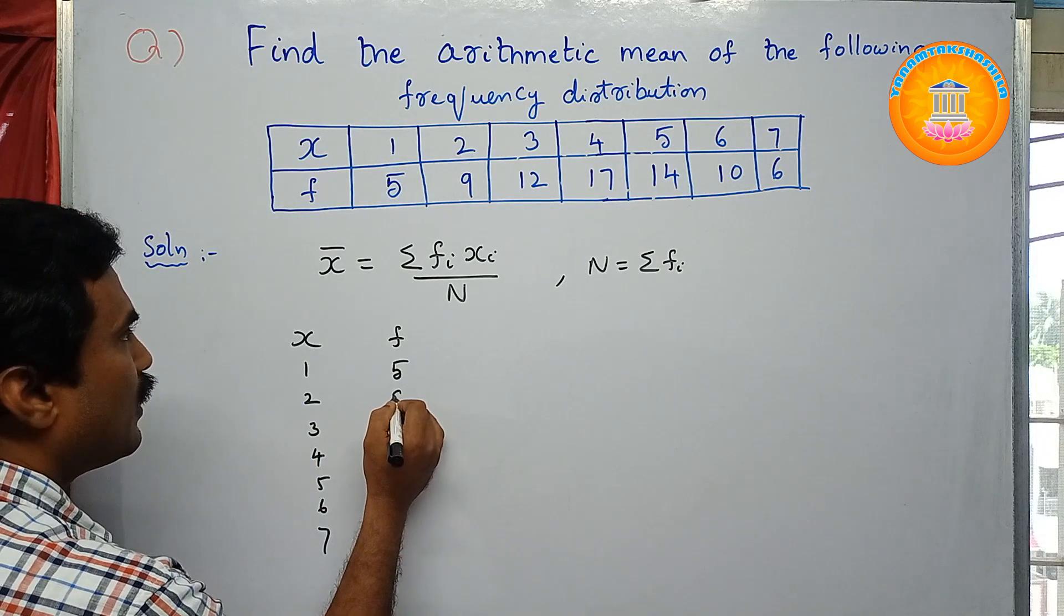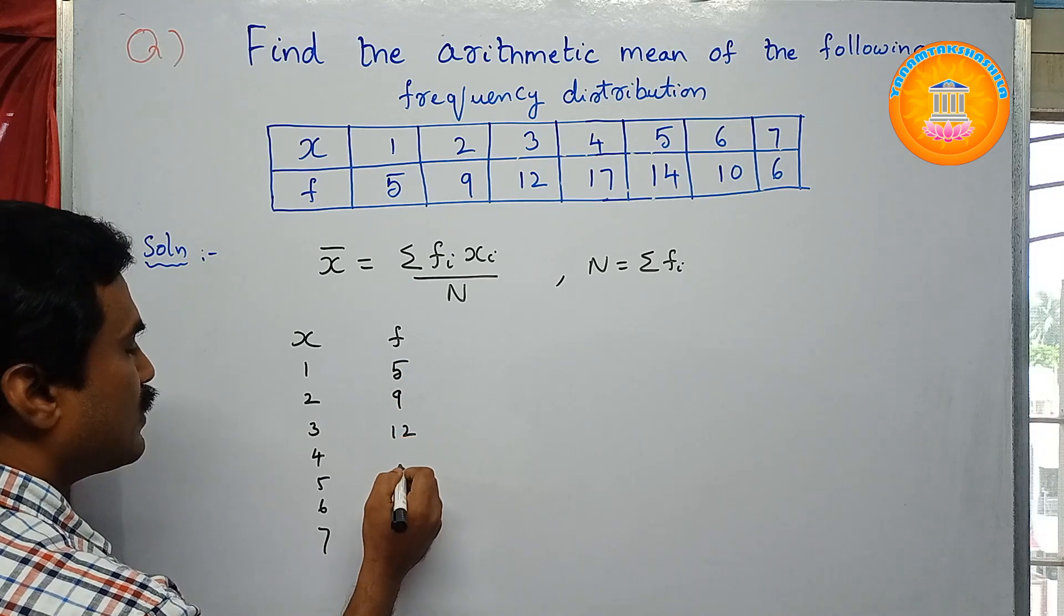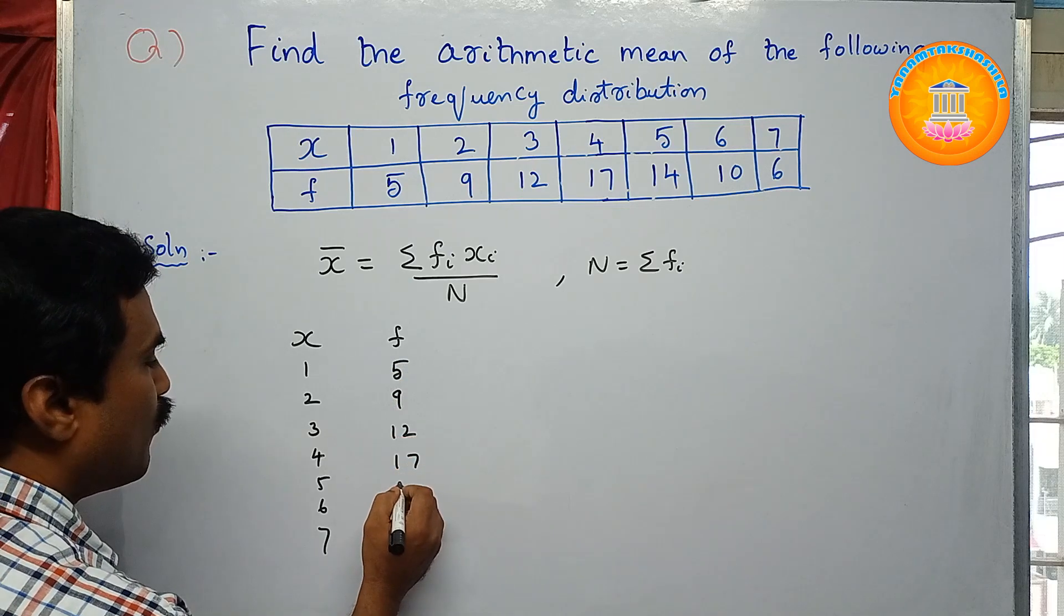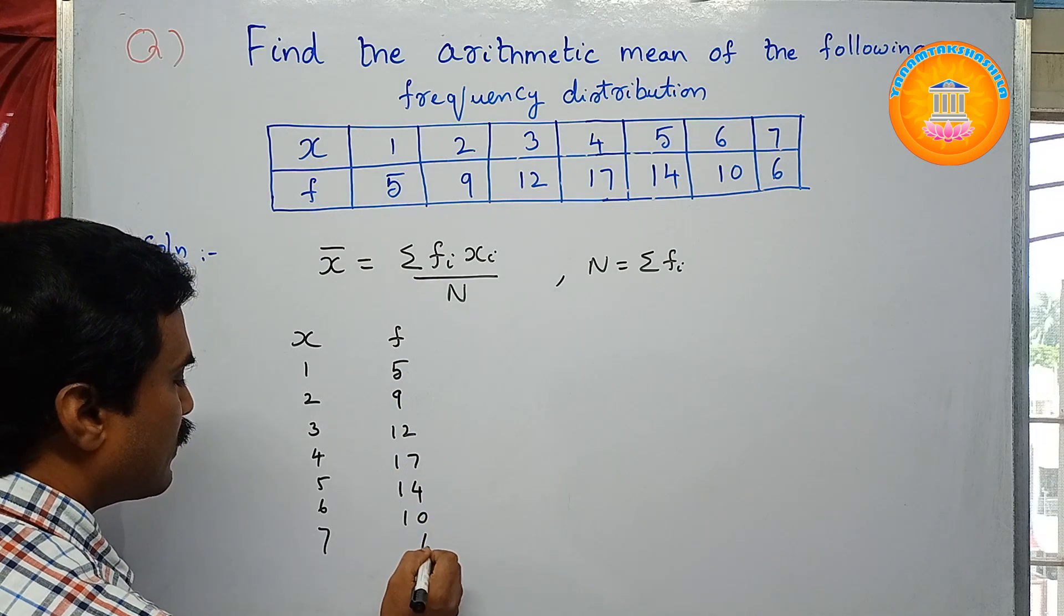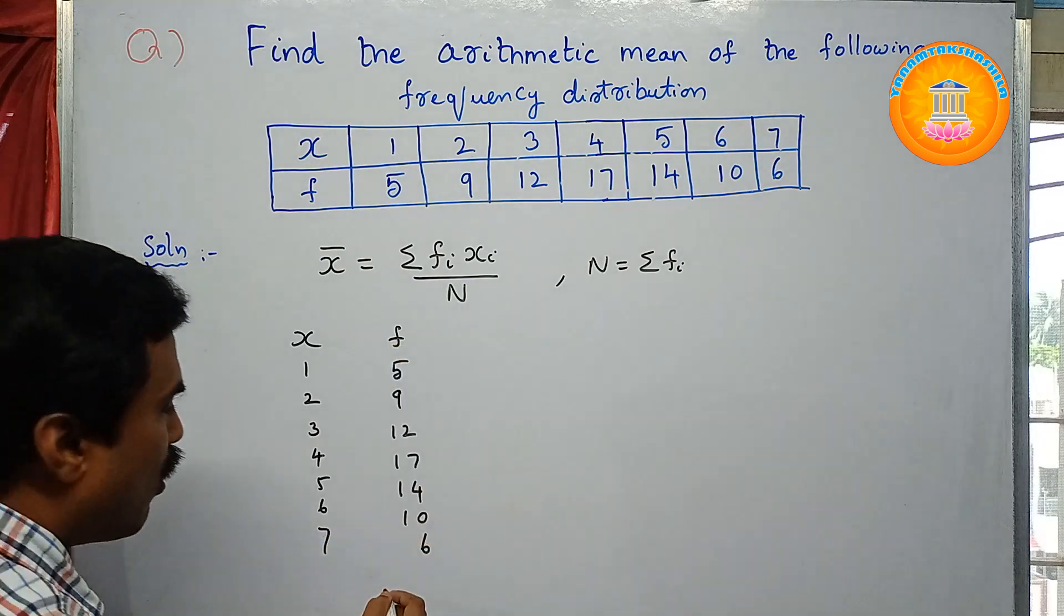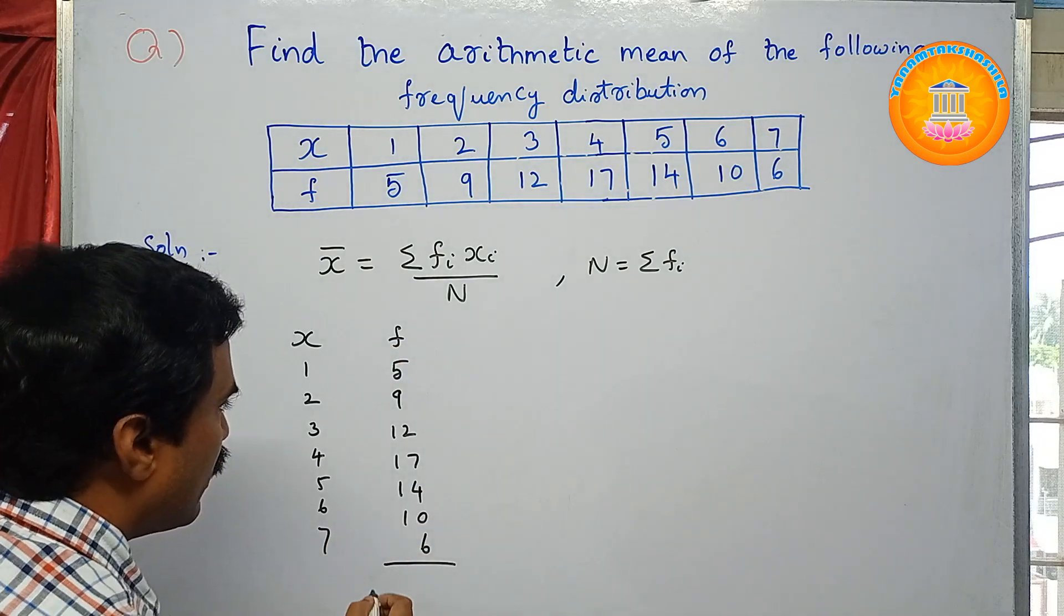Now what are the f values? F values are 5, and here 9, 12, 17, then 14, then 10, then 6.